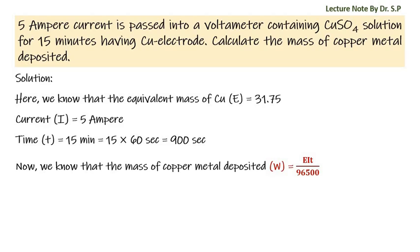Now we know that the mass of copper metal deposited W is equal to chemical equivalent E into current I into time t by Faraday constant 96500. That is equal to 31.75 into 5 into 15 into 60 by Faraday constant 96500. Here 15 is multiplied by 60 to convert minutes to seconds.